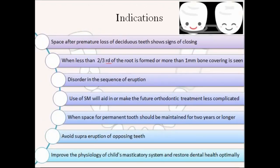Not every time a primary tooth is lost should a space maintainer be placed. The indications are: space after premature loss of deciduous teeth showing signs of closing when less than two-thirds of the root of the permanent tooth is formed, or there's more than one mm of bone covering — meaning eruption time will be longer and the space must be preserved. Also, if there's a disorder in the sequence of eruption, or if use of a space maintainer would make future orthodontic treatment less complicated, or when the space for the permanent tooth should be maintained for two years or longer.